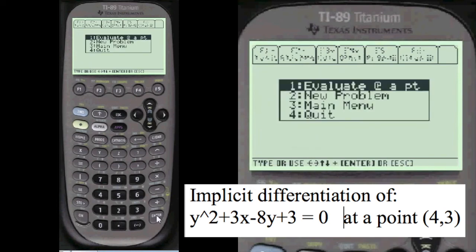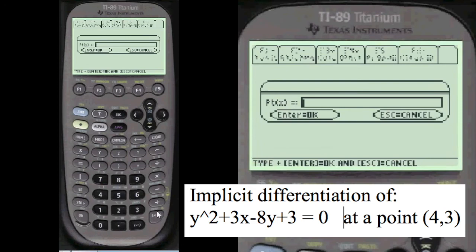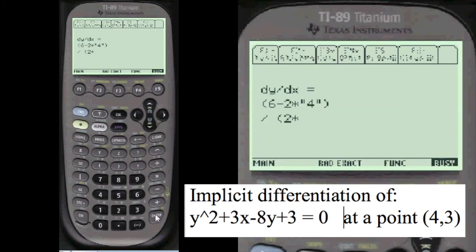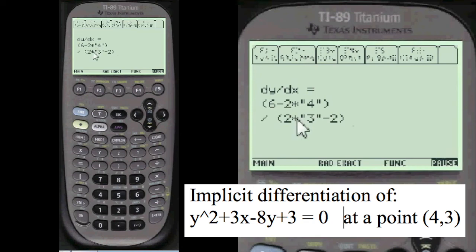Now we want to evaluate it at a point. So we're going to press the x value is alpha 4 and alpha 3. I assure you that also looks good to me. So we're substituting 4 and 3 into the, for the x and y values in the derivative.